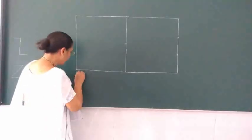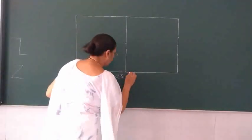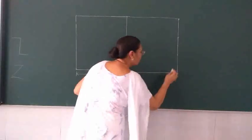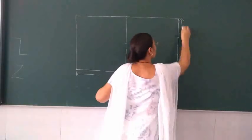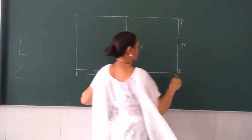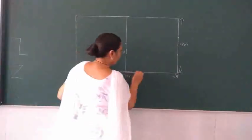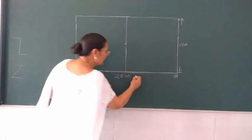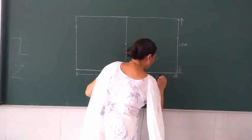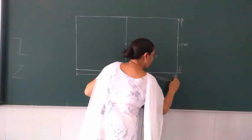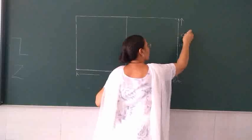The length of the basketball court is twenty-eight meters and the breadth is fifteen meters. The longer boundary line is called the side line or throw line, and the shorter boundary is called the end line.